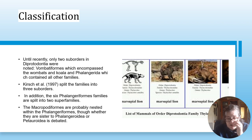Classification - until recently only two suborders of Diprotodontia were noted: Vombatiformes, which encompassed the wombats and koala, and Phalangerida, which combined all other families. A study by Kirsch et al. split the families into three suborders. Additionally, the six Phalangerida families were split into two superfamilies. The macropodiformes are probably nested within the Phalangerida, although whether they are sister to the Phalangeroidea or Petauroidea is debated.